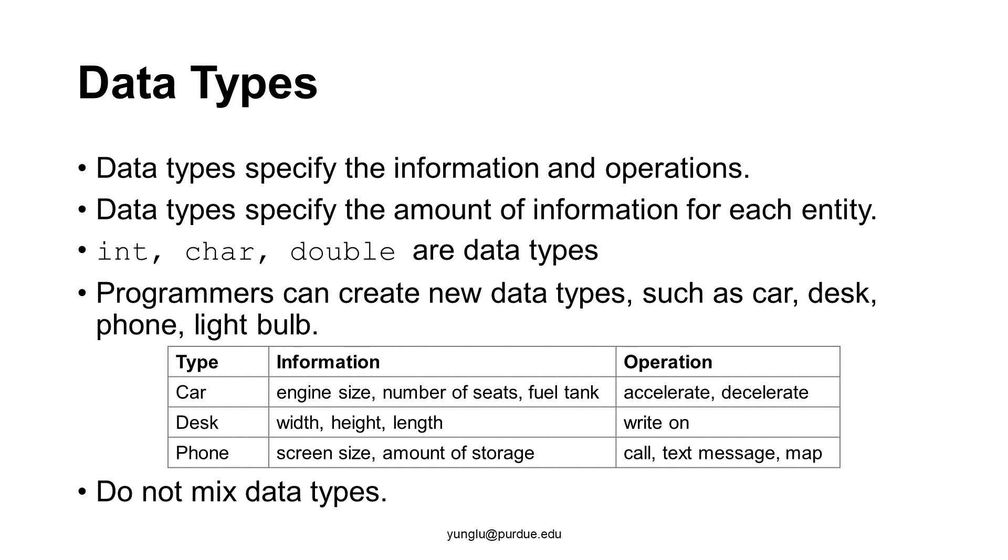Why are data types important? Because data types tell us what we can and cannot do. Let's consider a new data type called car. A car has information about the engine size, the number of seats, the size of the fuel tank, and so on. These are the information about a car.